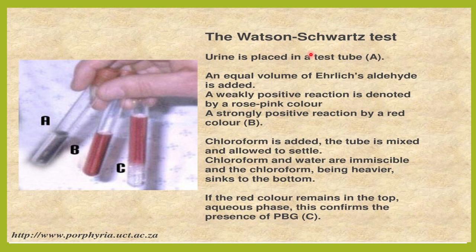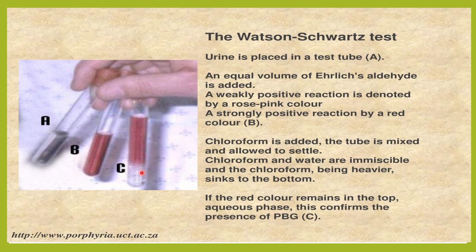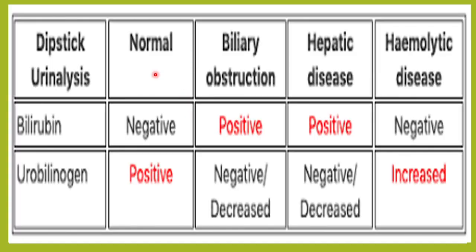To differentiate between urobilinogen and porphobilinogen, a confirmatory test called the Watson-Schwartz test is performed. An equal volume of Ehrlich aldehyde reagent is added to the urine sample. A reddish color appears with both urobilinogen and porphobilinogen. Chloroform is then added — since chloroform and water are immiscible, chloroform sinks to the bottom. If the red color remains in the top aqueous phase, this confirms the presence of porphobilinogen; if the aqueous solution is completely red, it indicates urobilinogen.